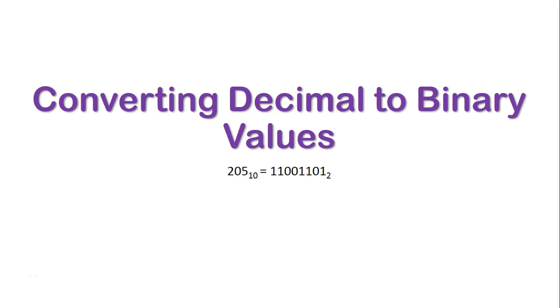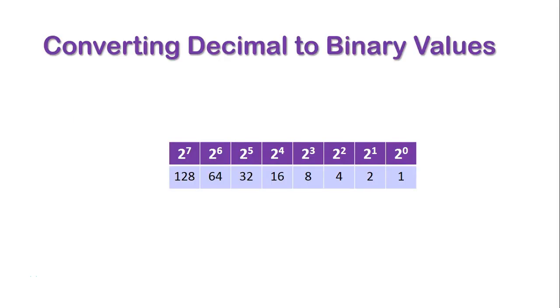We're now going to take a look at converting decimal values into binary values. Once again for this type of calculation, we're going to be using this binary table, which basically lists the values of 2 to the power of 0 right up to the power of 7.